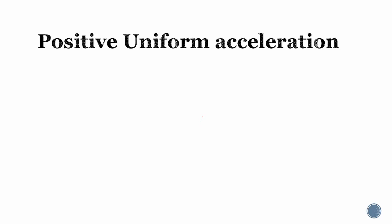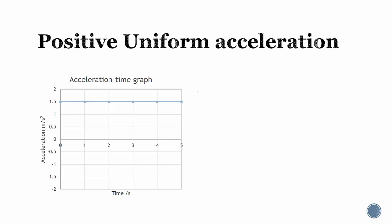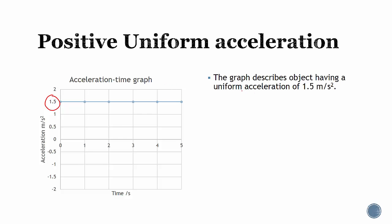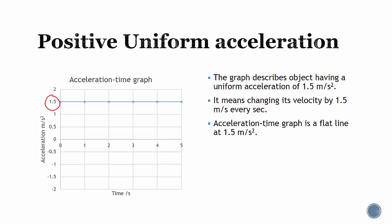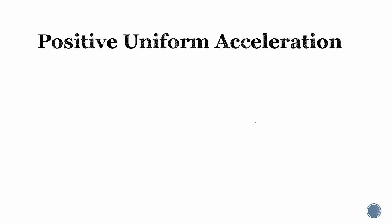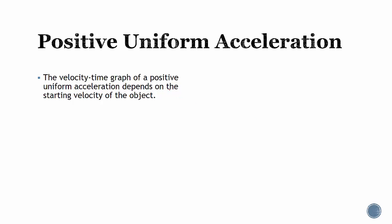For positive uniform acceleration, the object is changing its velocity at a positive rate. The acceleration-time graph is also a flat line, but with a positive value — for example, 1.5 meters per second squared. This means the object is changing its velocity by 1.5 meters per second every second, so the acceleration-time graph is a flat horizontal line at 1.5 meters per second squared.